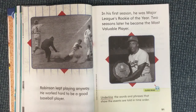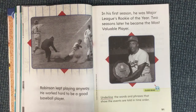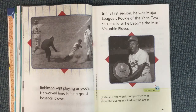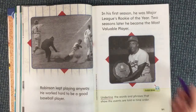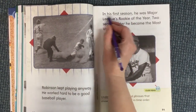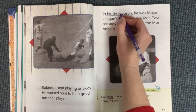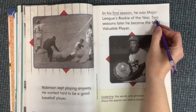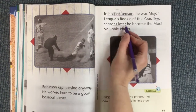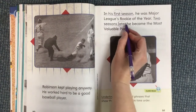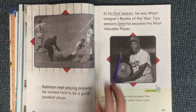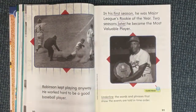Robinson kept playing anyway. He worked hard to be a good baseball player. In his first season, he was Major League's Rookie of the Year. Two seasons later, he became the most valuable player. Underline the words and phrases that show the events are told in time order. 'In his first season' — 'first' is our clue. 'Two seasons later' — 'later' is our clue. These two words, first and later, tell us events are happening in time order.